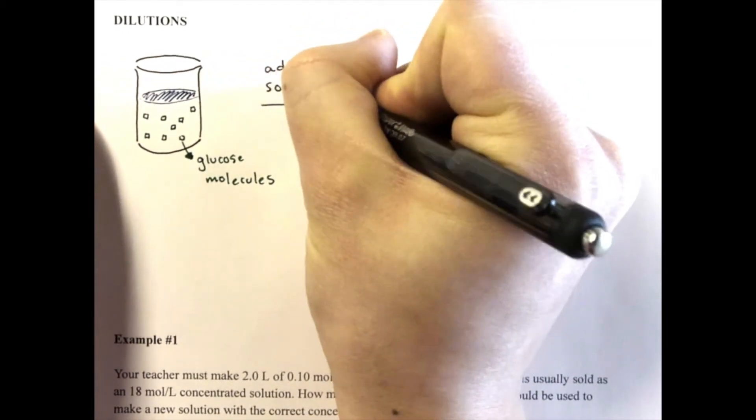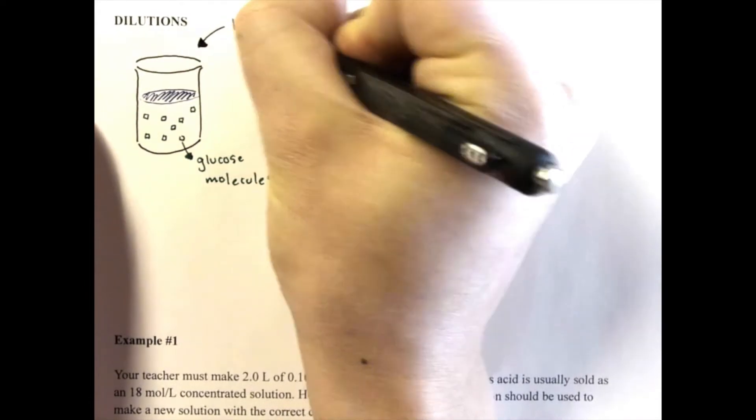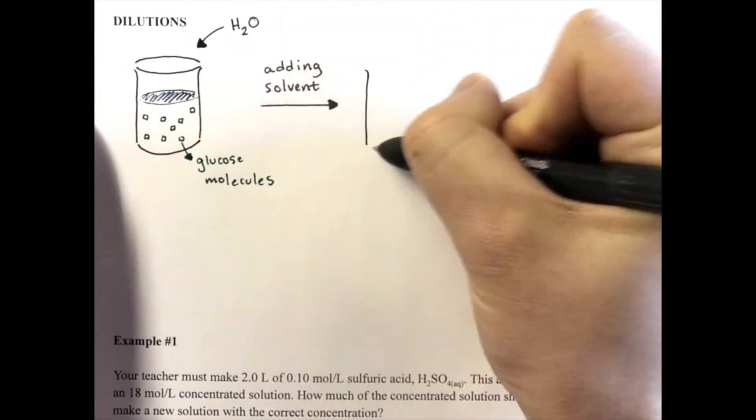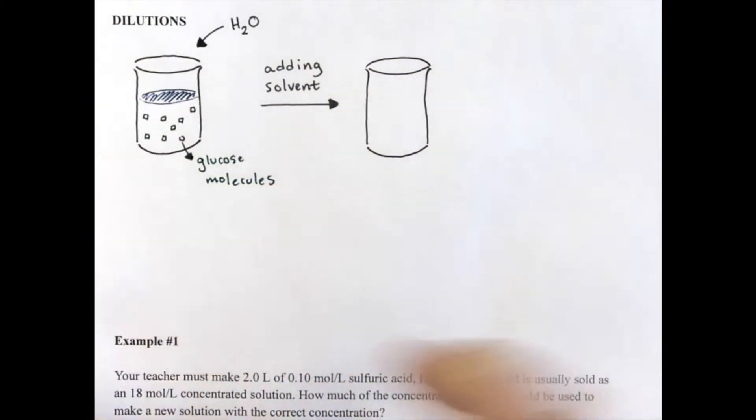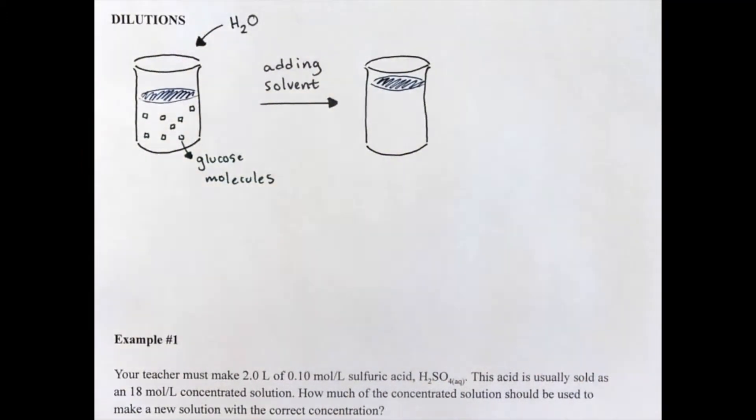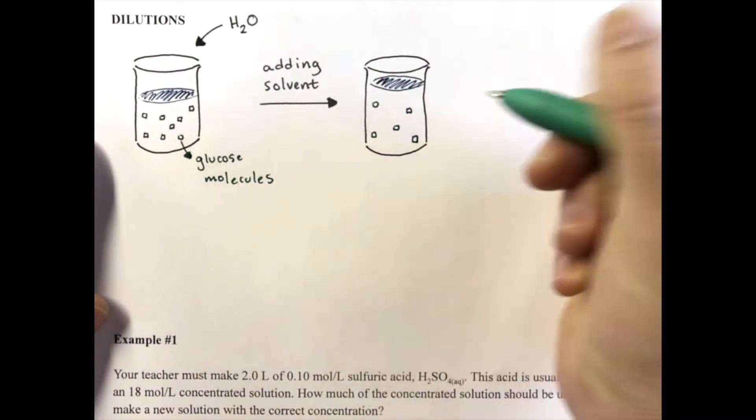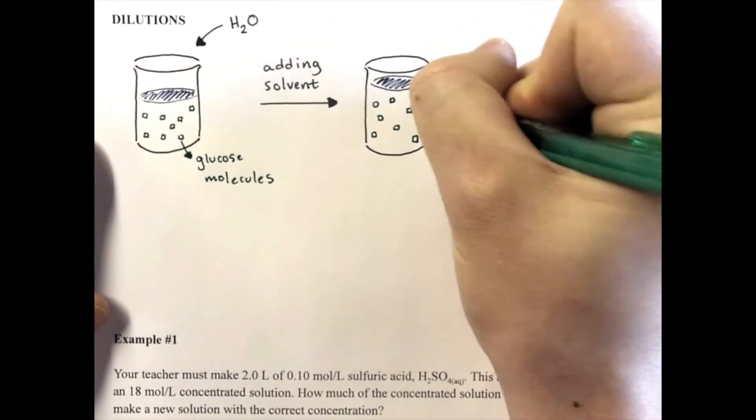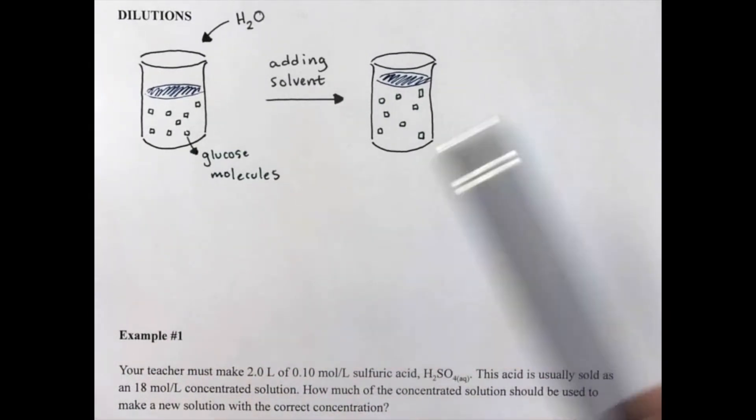So when we perform a dilution, we're adding solvent. In this case, we'd add some water. We'd add some water to the beaker, and when we add water to the beaker, the volume occupied by it goes up, so it occupies a larger volume. But the number of glucose molecules actually stays the same. So I'm going to try to draw eight here: one, two, three, four, five, six, seven, eight. So the glucose molecules actually stay the same after adding the water.